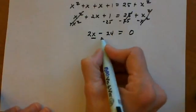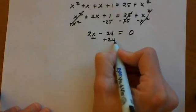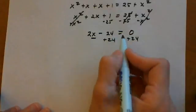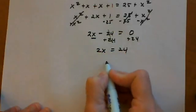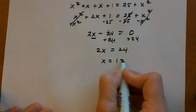Solve for x by adding 24 to both sides: 2x = 24. Then divide by 2: x = 12.